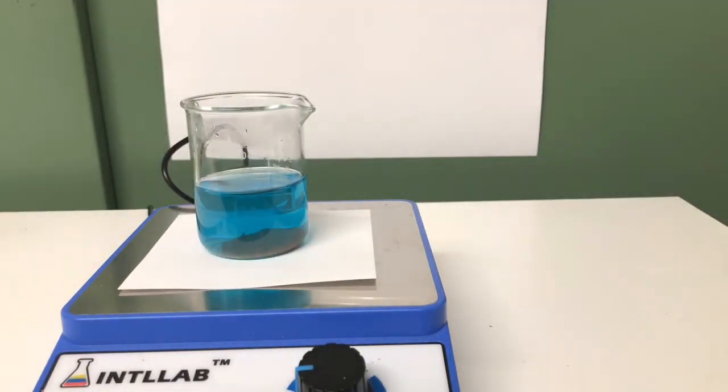Copper sulfate reacts with iron powder to form elemental copper and iron sulfate.